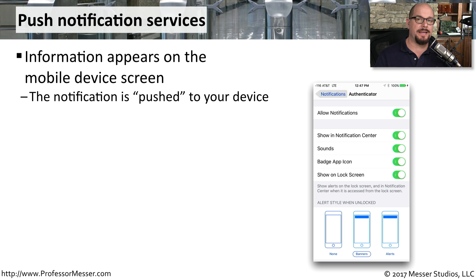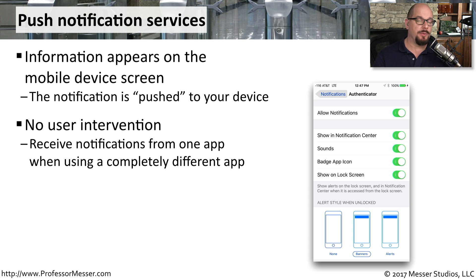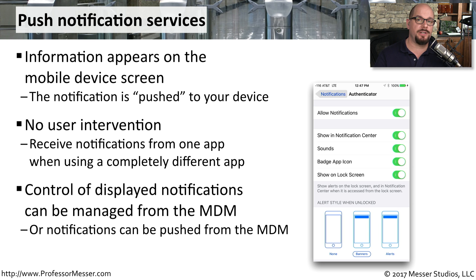Mobile devices can also have information pushed onto the screen automatically — this information simply appears without requiring any input from the user. This means you could be using one app and then receive a notification about something that occurred in another application. This type of notification can be managed locally on the mobile device, but notifications can also be managed on the mobile device manager so that everybody has exactly the same notification function on their mobile devices.